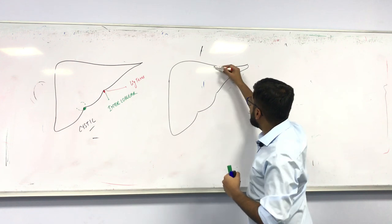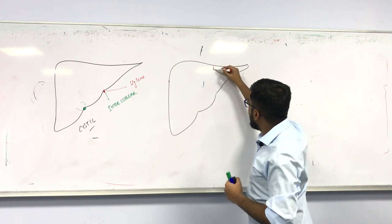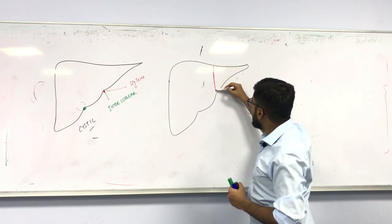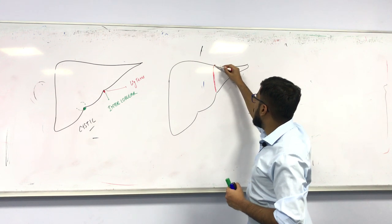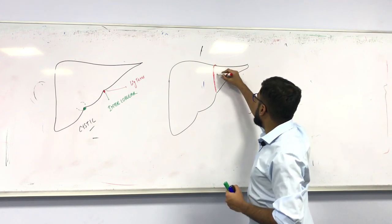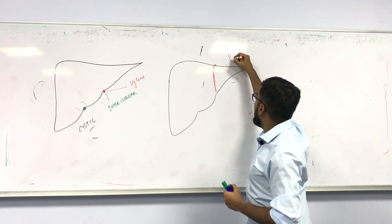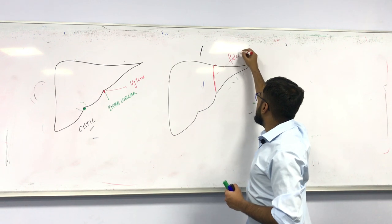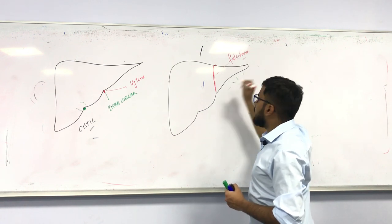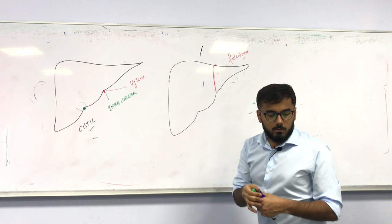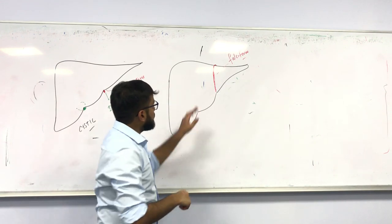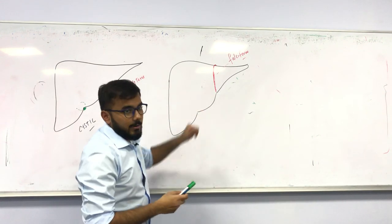In the center of the anterior surface, there is a ligament that goes toward the back. This ligament is called the falciform ligament.